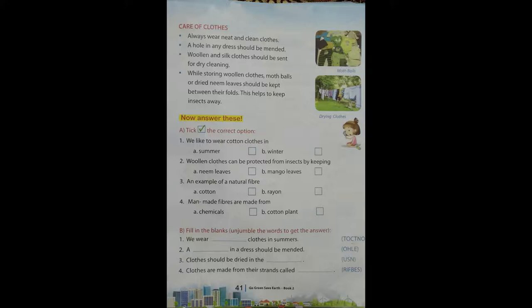First question: We like to wear cotton clothes in dash. Two answers are given — summer or winter. Second question: Woolen clothes can be protected from insects by keeping dash — neem leaves or mango leaves. Think about the right answer. Next question: An example of a natural fibre. Two answers are given — cotton or rayon.